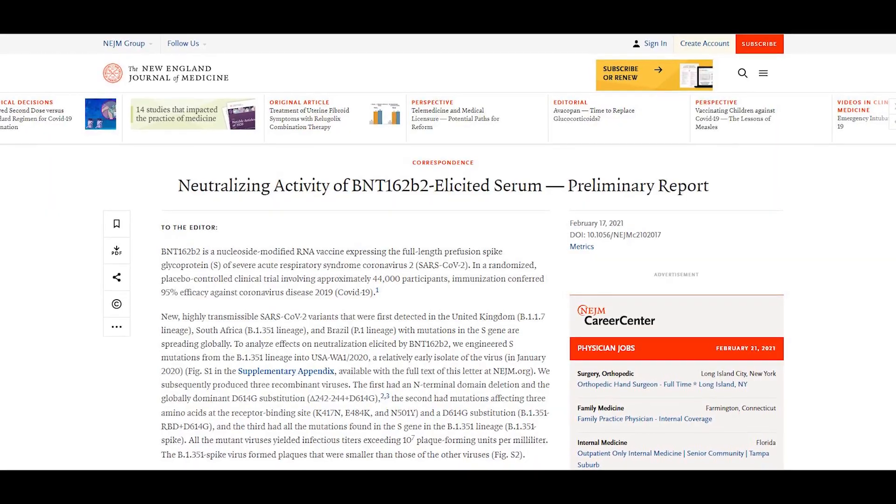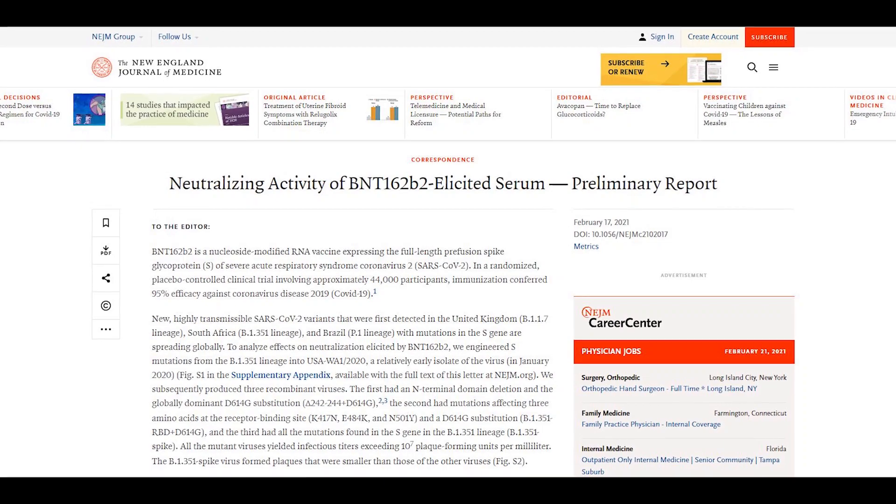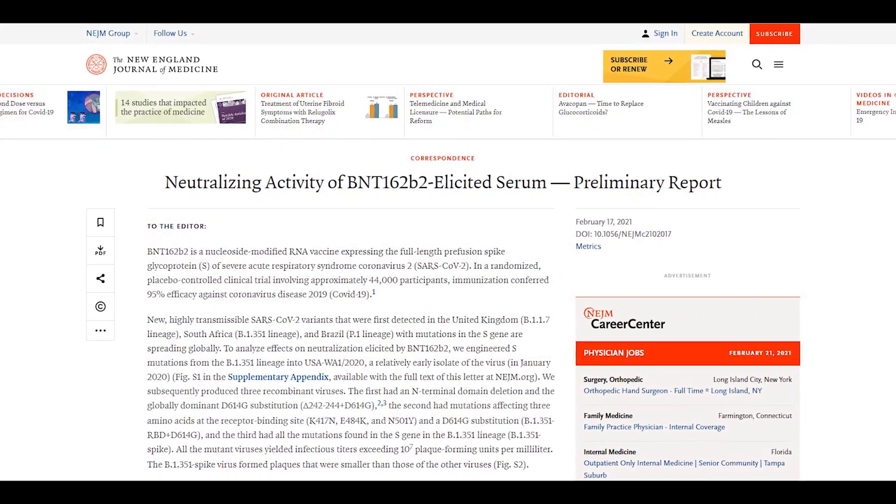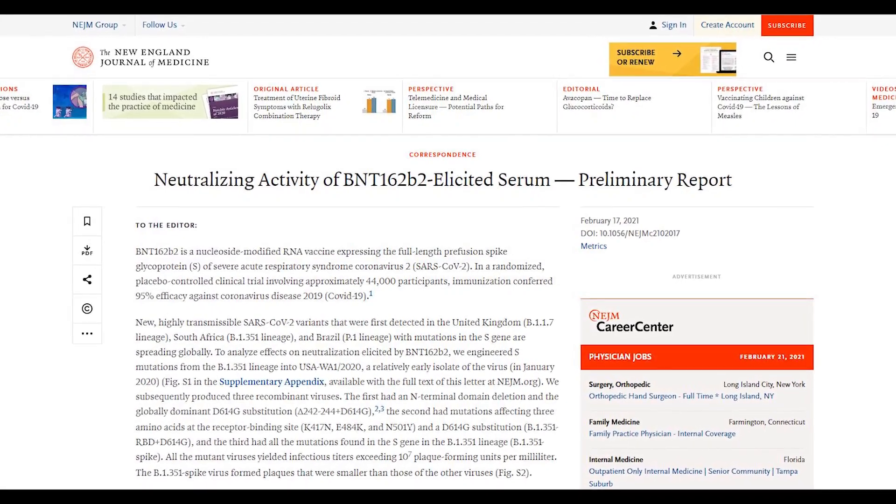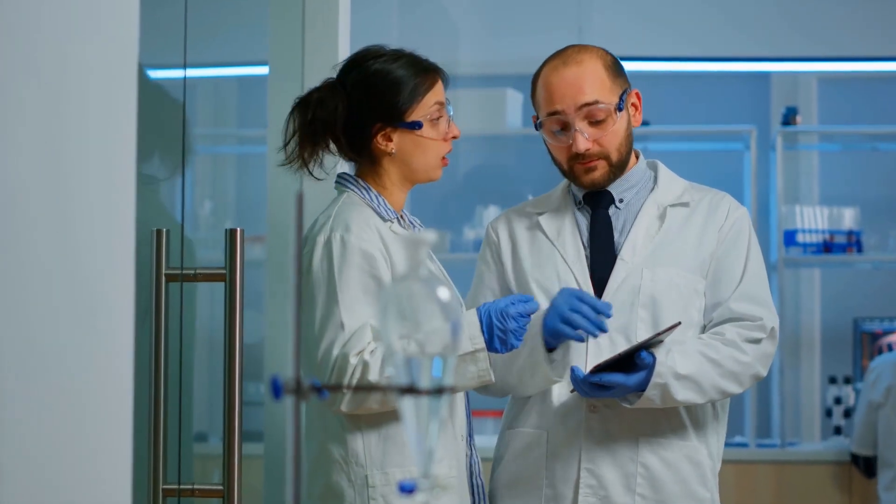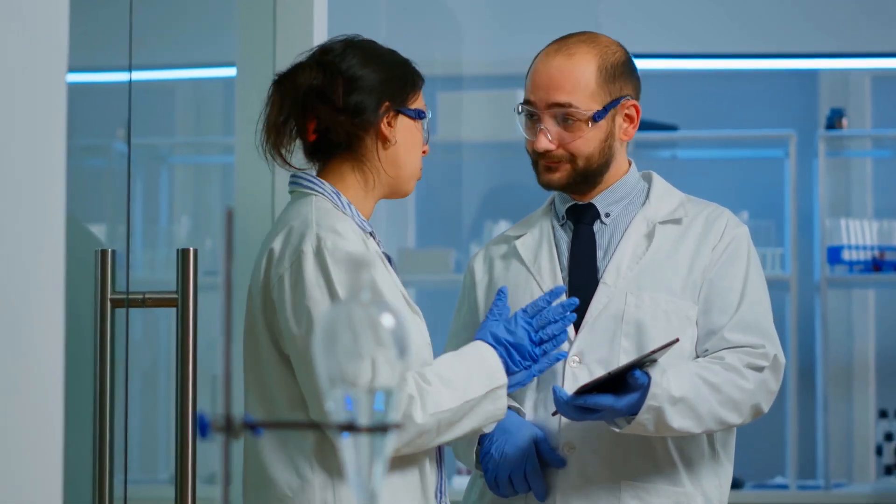In the New England Journal of Medicine, the previous paper about the Pfizer vaccine showed an efficacy of 94.8% against COVID-19 after two doses. In the latest paper, the findings showed a different story when used against the B.1.351 lineage.